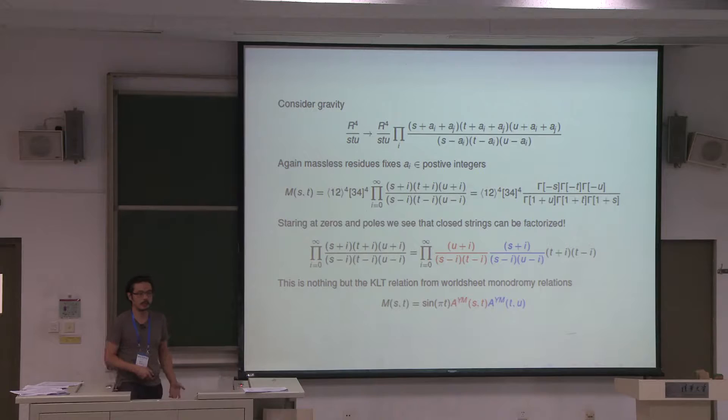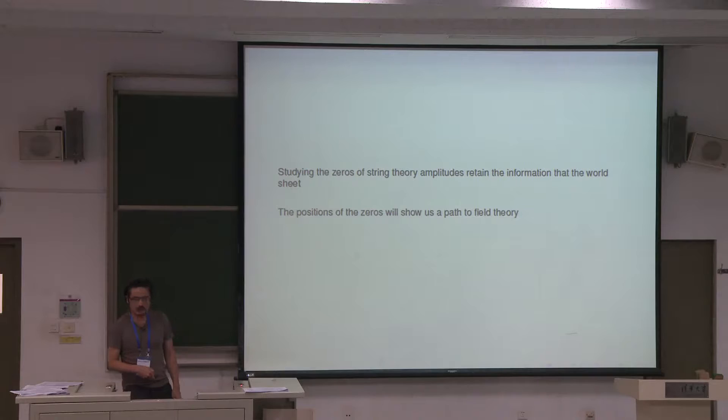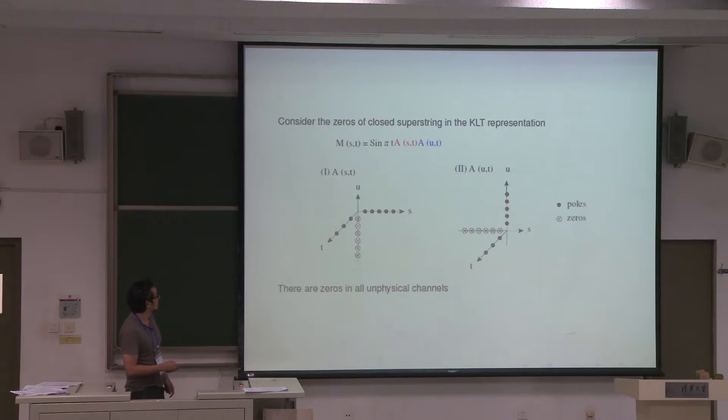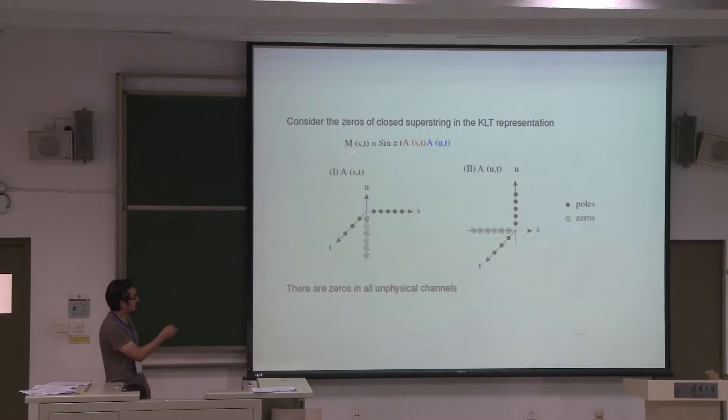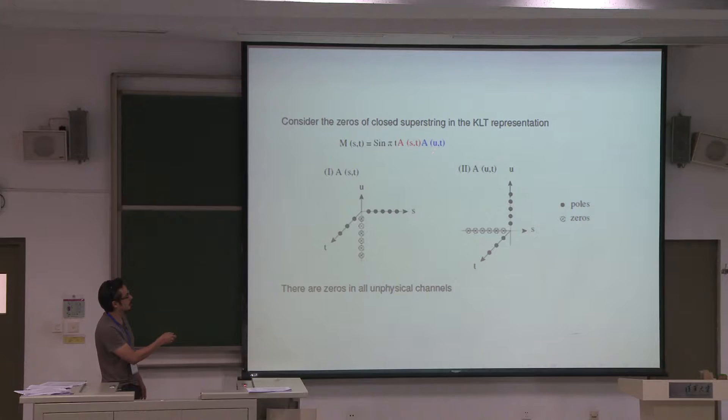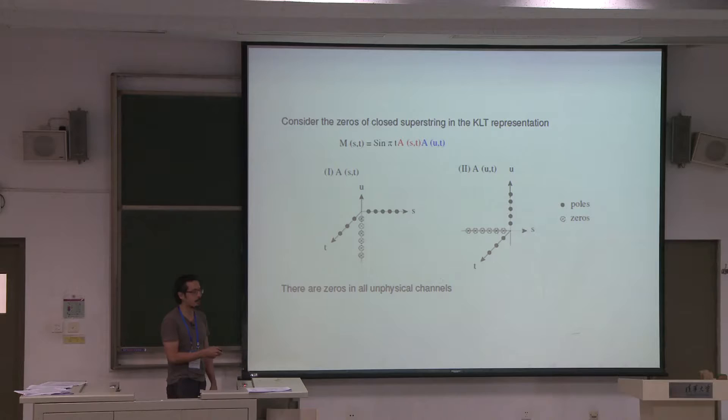This is my understanding of string theory from zeros and poles. Now I'll show how the zeros and poles show us a path to a world sheet theory for field theory. I'm going to consider the closed string amplitude, written in terms of products of two open strings, and stare at the positions of poles and zeros of this open string. There are three axes of kinematic invariants — S, T, and U channels — which I'll treat independently for illustration.